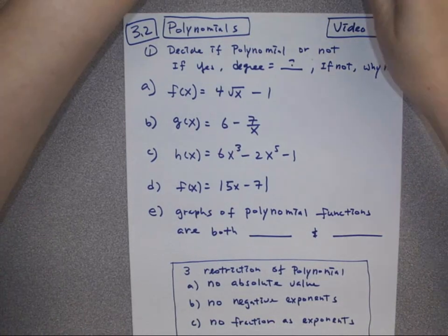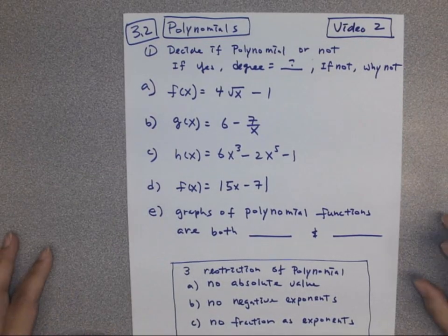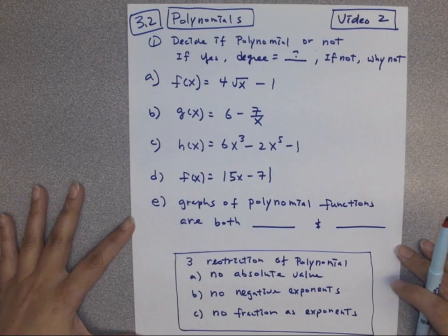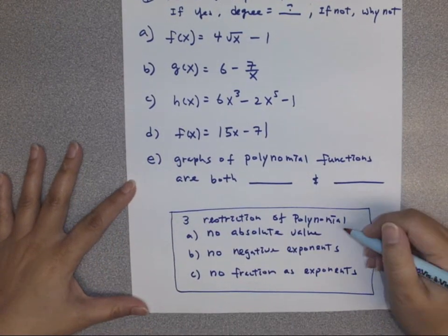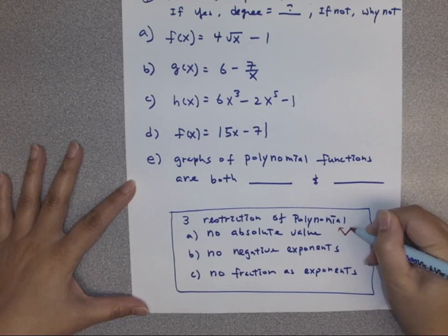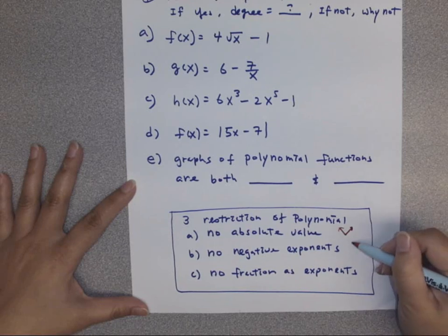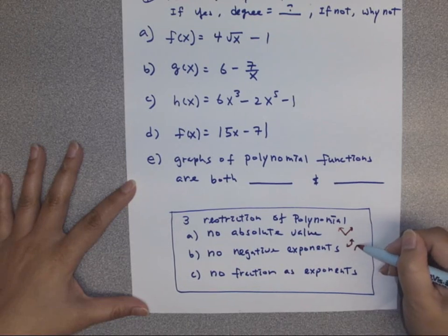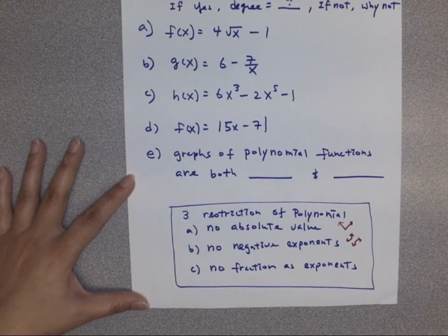Chapter 3.2 is about polynomial functions. We have three restrictions for polynomials. We cannot have absolute values because it would be kind of sharp. And we cannot have negative exponents because negative exponents mean you have x in the denominator. A lot of times those graphs will come in pieces. And no fractions as exponents.